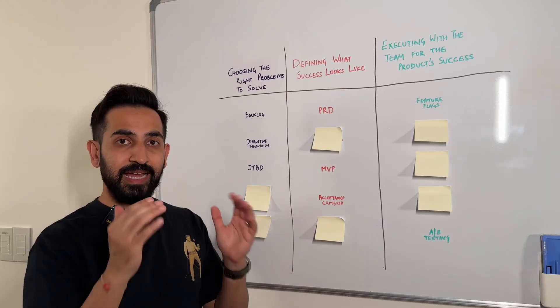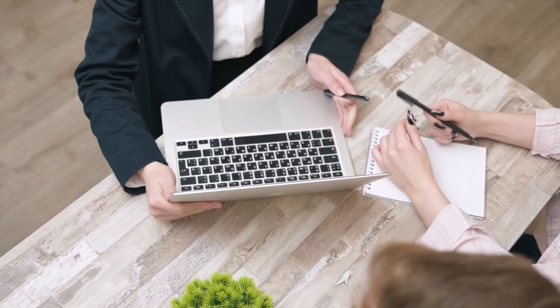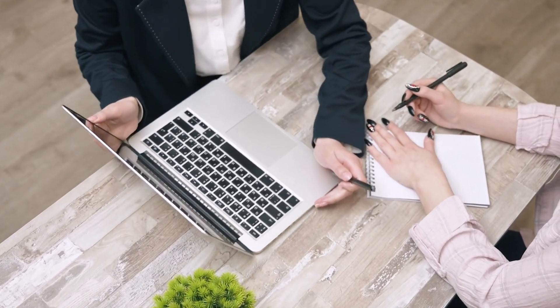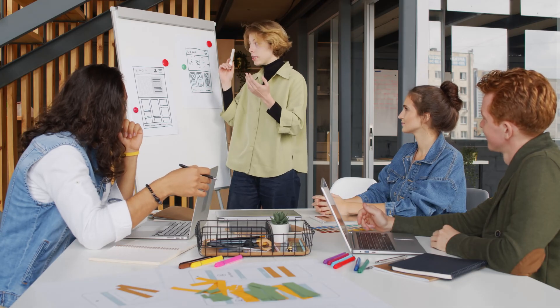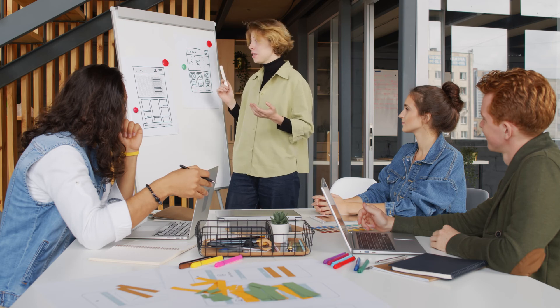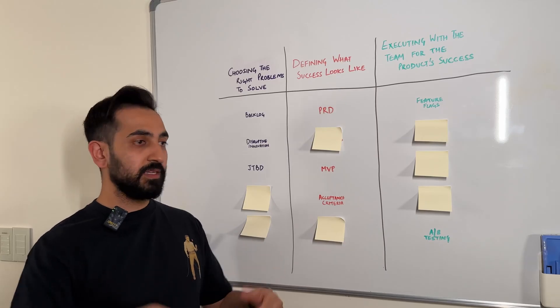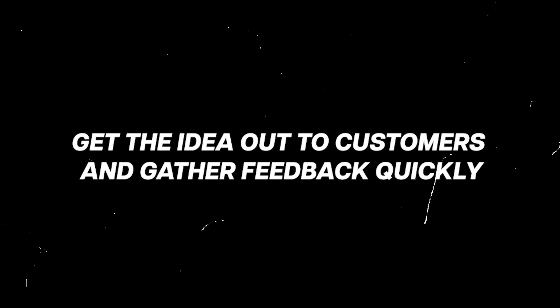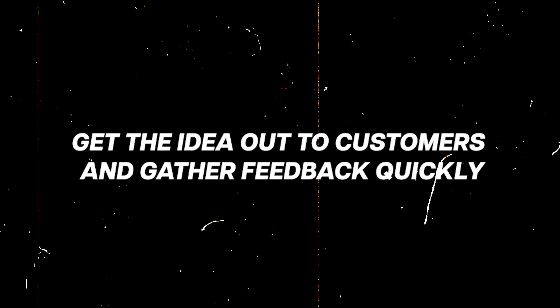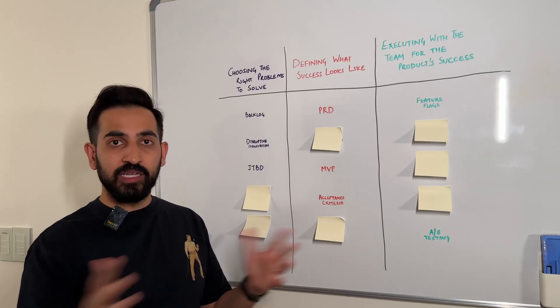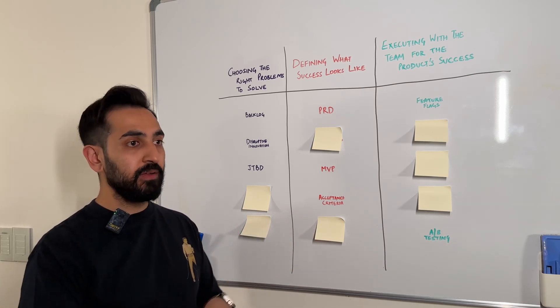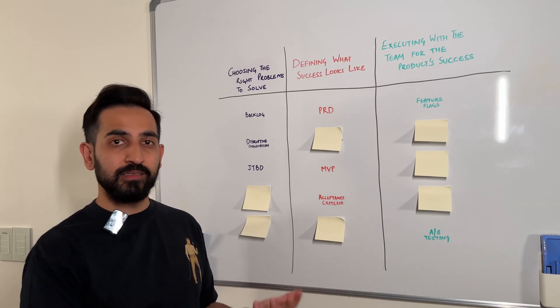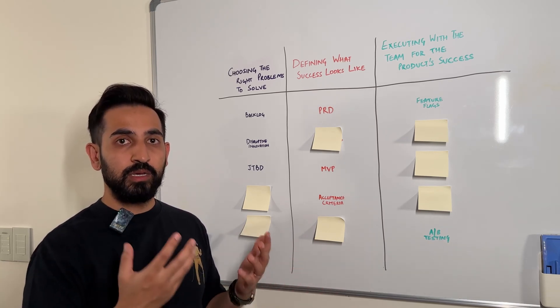MVP, or minimum viable product, is a version of the product that has the minimum features required to address the customer's pain point. It gives the product managers and product team a signal in terms of what to continue building and invest more development time and effort on. The goal of an MVP is to get a product idea out to customers as quickly as possible and then gather feedback. Building MVPs is essential for any startup or company, because without them you'll be building full-fledged products and then realizing they don't solve an actual customer need.